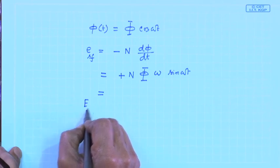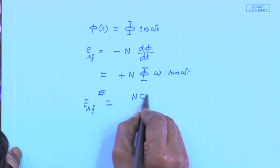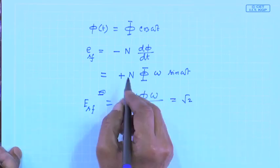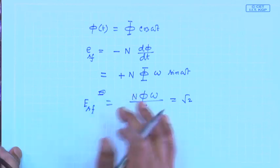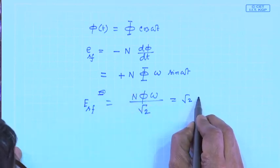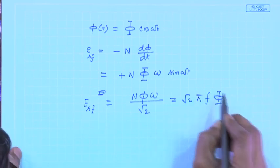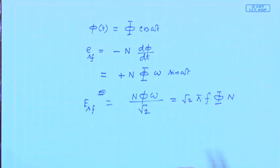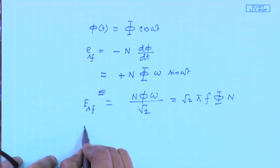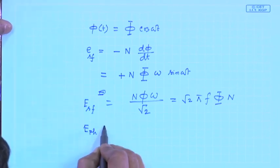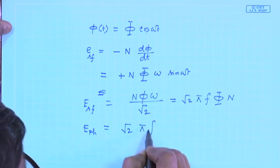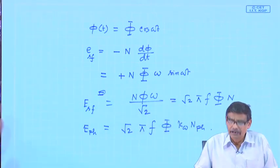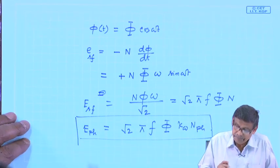For a single-turn coil: E = √2 × π × f × flux per pole × n. If there are several coils connected in series and distributed, then for the phase voltage: E_phase = √2 × π × f × flux per pole × k_w × N, where k_w is the winding factor. This expression is the same as what was obtained from the flux density approach — confirming the result.